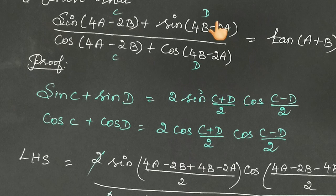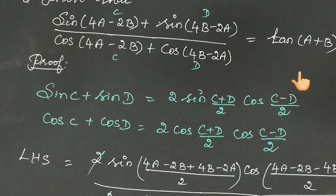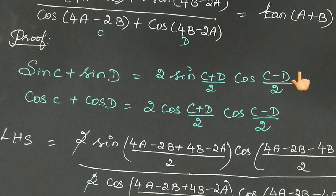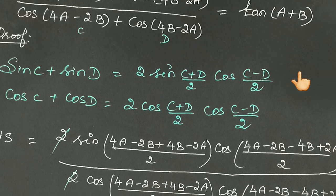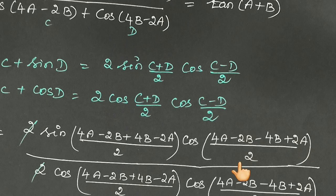In the denominator, C minus D gives 4a minus 2b minus (4b minus 2a). Minus into minus becomes plus 2a. So the expression inside becomes 4a minus 2b minus 4b plus 2a, the whole thing divided by 2.